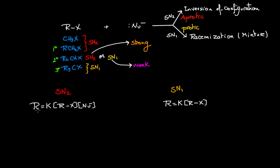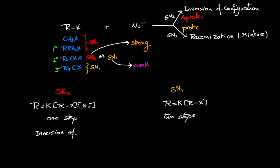The SN2 mechanism is concerted, meaning it occurs in one step — bond making and bond breaking happen at the same time. The SN1 mechanism occurs in two steps: bond breaking happens first to form a carbocation, then bond making happens after. SN2 results in an inversion of configuration, while SN1 results in racemization, giving a mixture of stereoisomers.